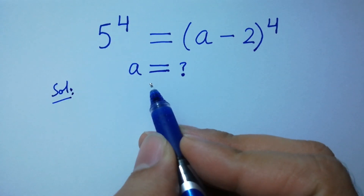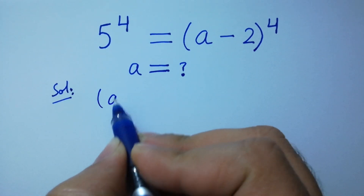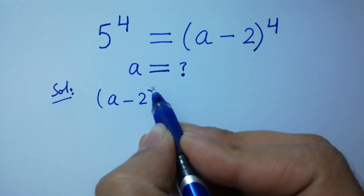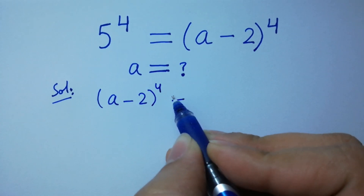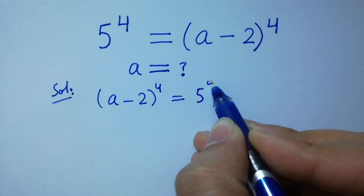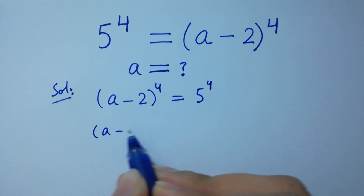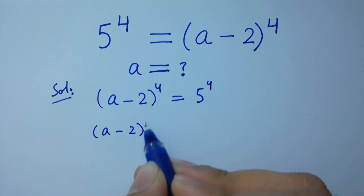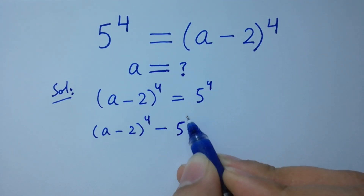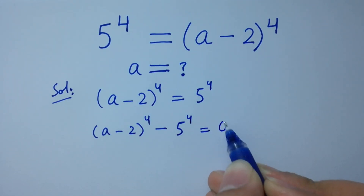This is the same as (a minus 2) to the power 4 equal to 5 to the power 4. So (a minus 2) to the power 4 minus 5 to the power 4 equals 0.